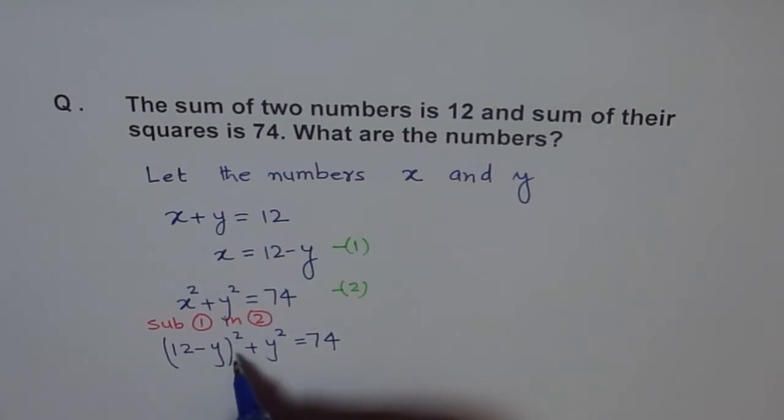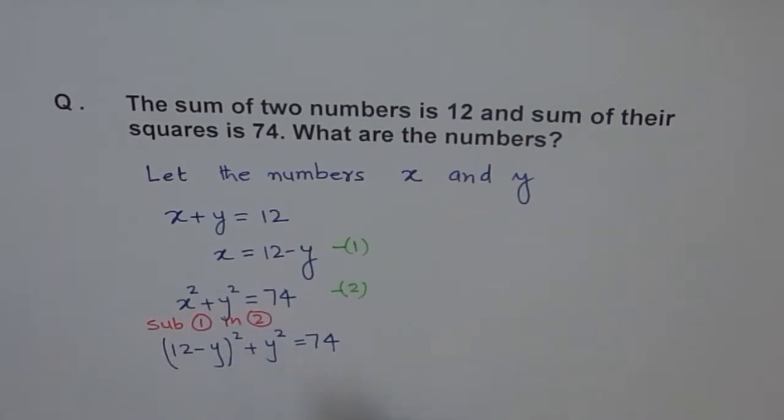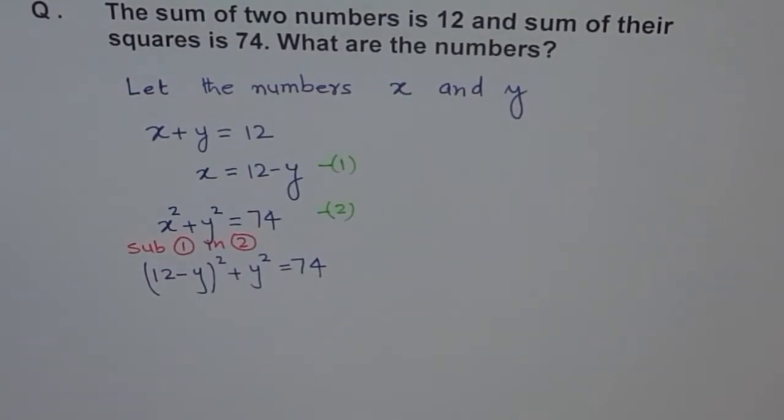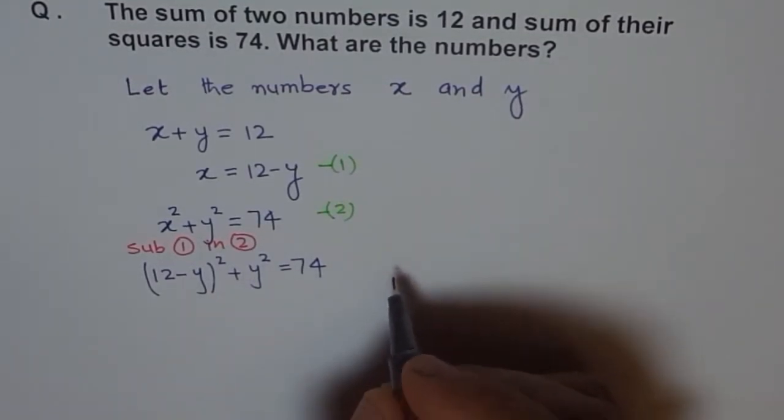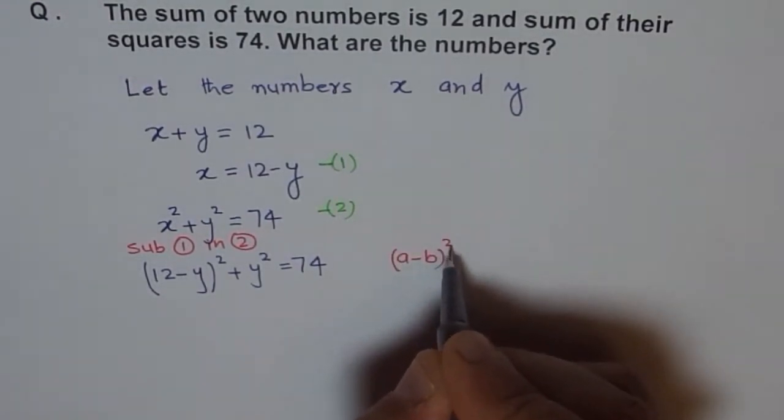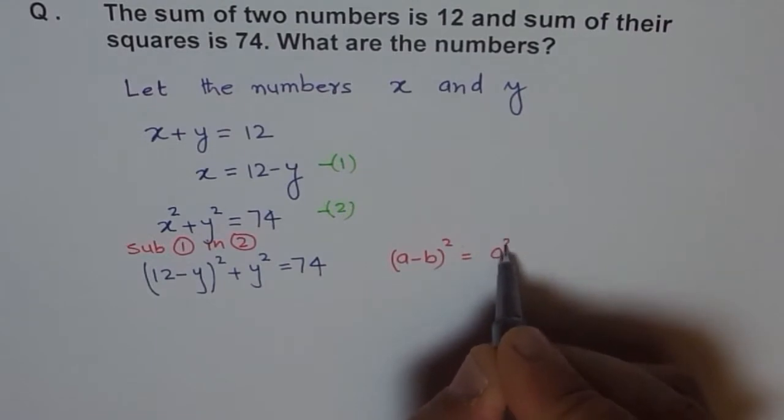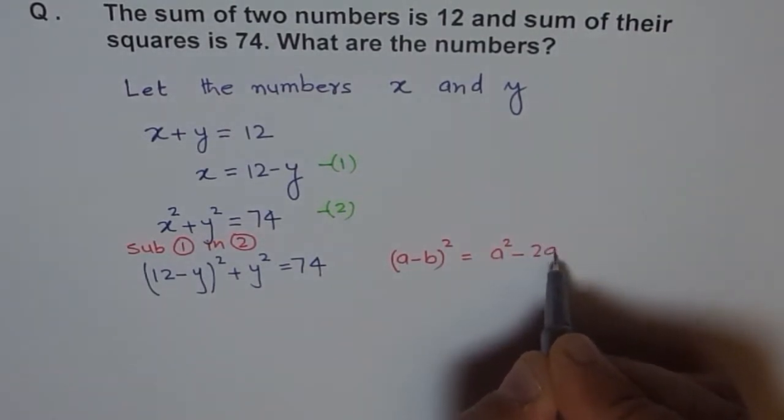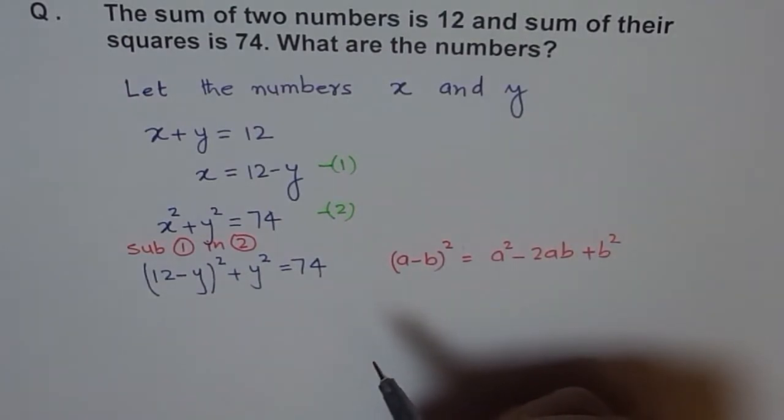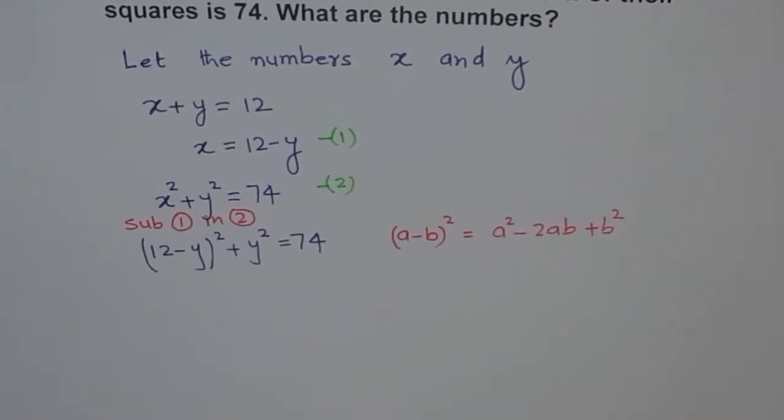Now, we can expand this using perfect square formula. Do you remember that? a minus b whole square equals to a square minus 2ab plus b square. So, we will use that and expand this. After that, we will try to simplify it. Let's expand it.